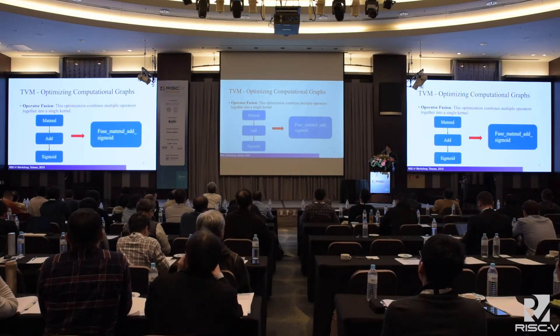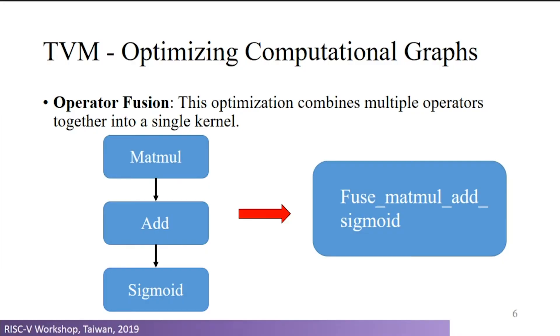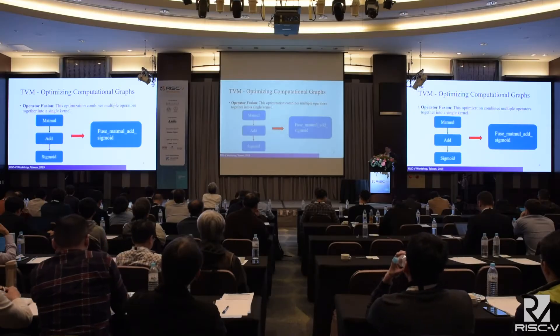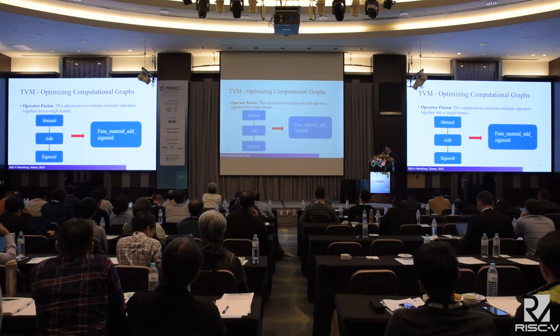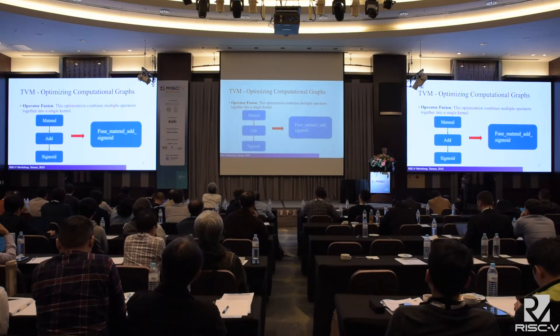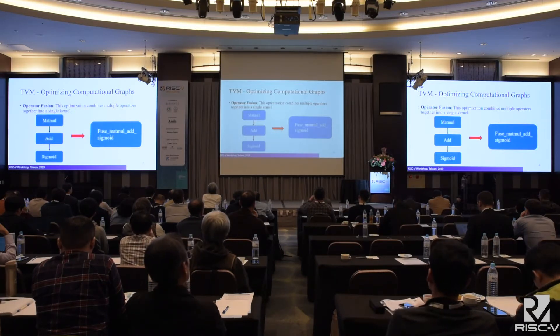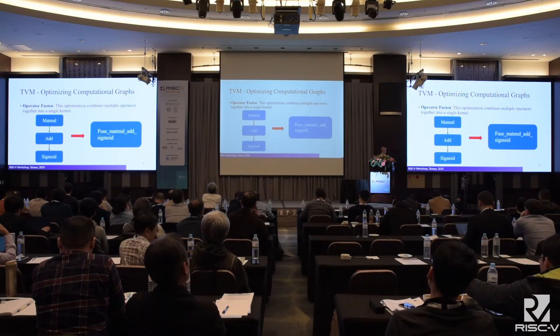Let's talk about some of the TVM built-in optimizations. At the graph level, one optimization is operator fusion — fusing multiple nodes into one node. We can think of each node as a function. With three separate nodes, we have to call three functions, each loading data from memory and storing it back after computation. If we fuse three nodes into one, we only need to load once and store once, reducing execution time.